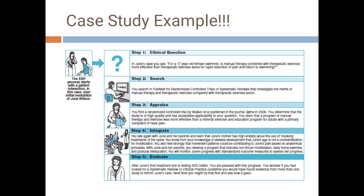Now, applying these five EBP steps to June Wilson's case study: step one, the clinical question. In June's case, you ask: for a 17-year-old female swimmer, is manual therapy combined with therapeutic exercise more effective than therapeutic exercise alone for rapid reduction of pain and return to swimming? The aim is to reduce neck pain so the patient is capable of participating in the swimming competition.